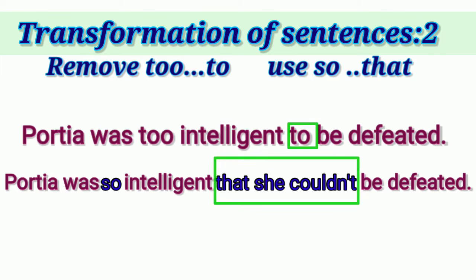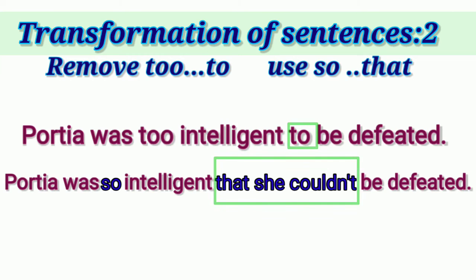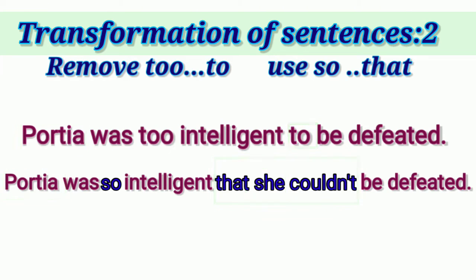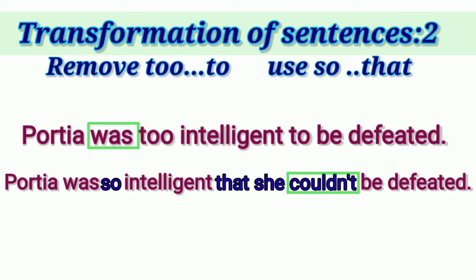The subject in the transformed sentence occurs twice. Since Posha is a name and a girl's name, the first time we write 'Posha' and the second time we write 'she.' In sentences in past tense, we do not use 'cannot' but instead use 'could not.'